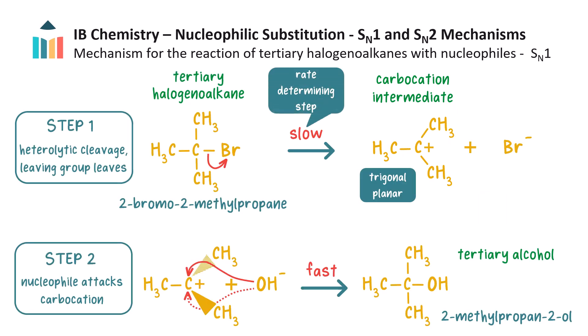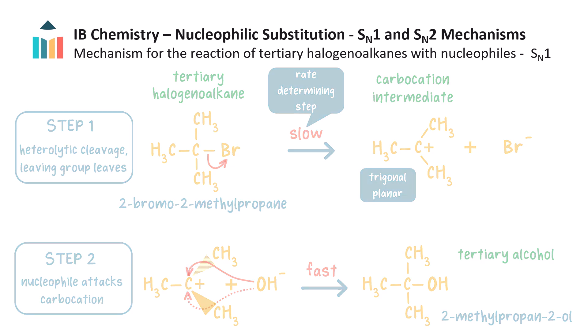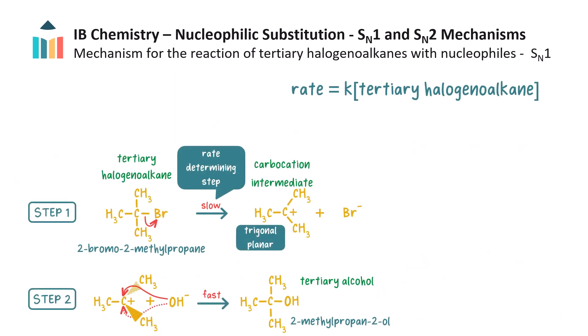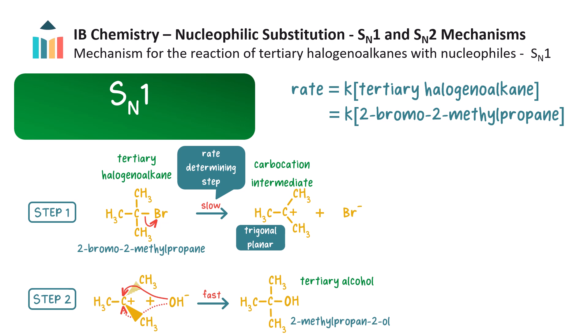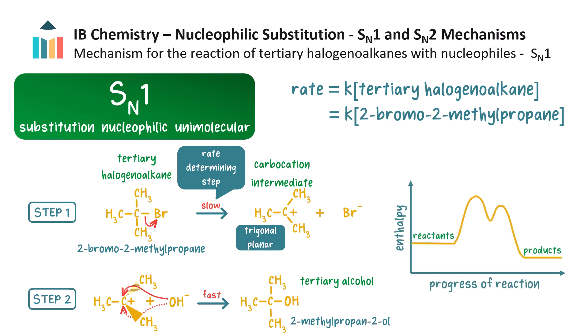The slow step is the rate-determining step. Therefore, the rate is dependent on only the concentration of one species — the halogeno alkane — and so this is a unimolecular reaction mechanism. The rate is first order overall. This mechanism is called an SN1 mechanism. It is a substitution reaction by an incoming nucleophile with a unimolecular rate-determining step.